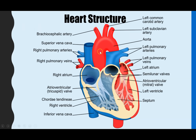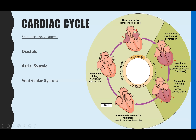In the last video we went through the structures of the heart, looking at the structure and function of the four chambers, the four major blood vessels, and the valves. Of particular importance for this video will be the valves and the thickness of the muscular walls. The cardiac cycle looks at pressure and volume changes within the heart, and I'm going to split it into three key stages: diastole, atrial systole, and ventricular systole.